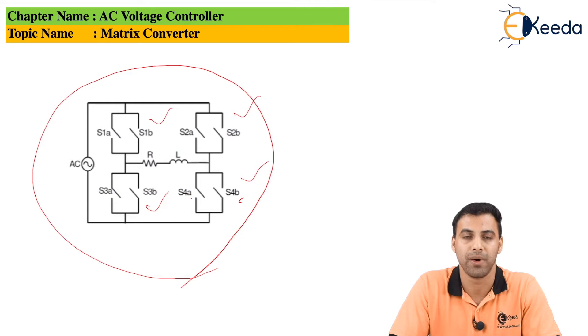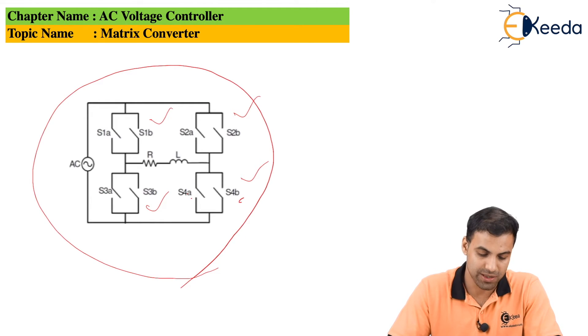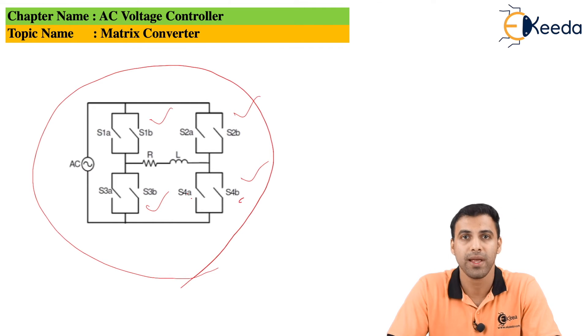As of now, the most important thing is to remember the circuit diagram - that in matrix converter there is an RL load connected across the output and there are four bidirectional switches connected.